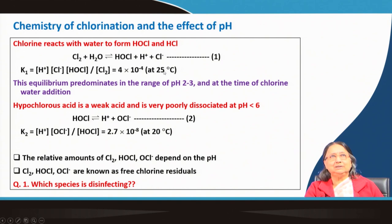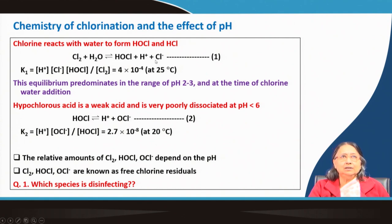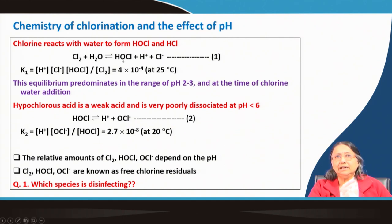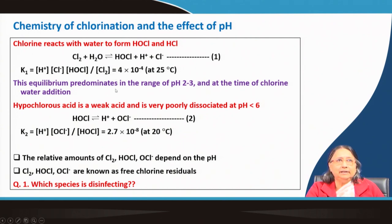This equilibrium predominates in the pH range of 2 to 3 at the time of chlorine-water addition — pH goes down because H⁺ is produced. If you increase the pH, more and more HOCl will be formed and chlorine concentration will reduce. HOCl is a weak acid, always in equilibrium with H⁺ and OCl⁻. The equilibrium constant for HOCl ⇌ H⁺ + OCl⁻ is K₂ = [H⁺][OCl⁻] / [HOCl] = 2.7×10⁻⁸ at 20°C.